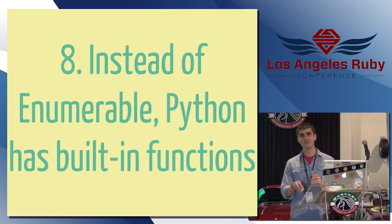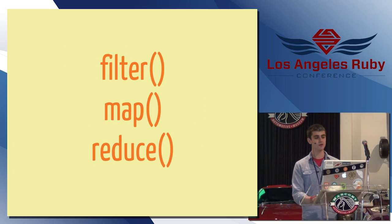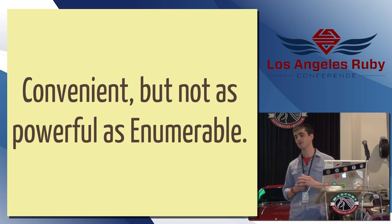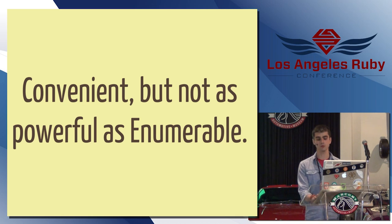So Python doesn't have enumerable, which is another great feature of Ruby. Python has the built-in functions like I just talked about, filter, map, reduce, things like that, which are very convenient, but I don't, it's not as powerful as enumerable. There are also a few other third-party libraries in Python, like functools is something you can import to get some of that functionality, but I just, I've never known it to be as elegant as enumerable in Ruby.